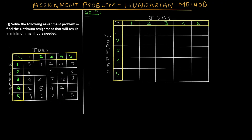The question is: solve the following assignment problem and find the optimum assignment that will result in minimum man hours needed. We have a 2D matrix where the rows consist of workers — five different workers — and we have five different jobs shown in the columns. The values represent the time required for each worker to perform each job; for example, the time for worker one to complete job two is nine hours.